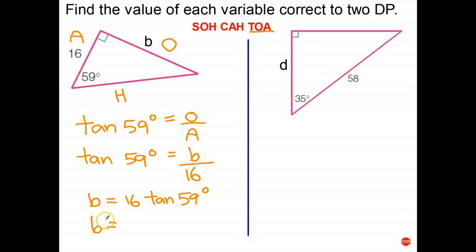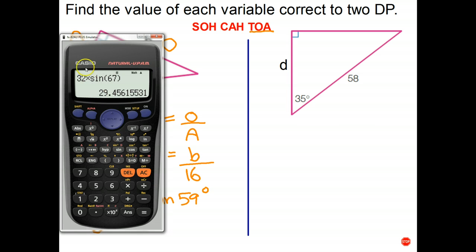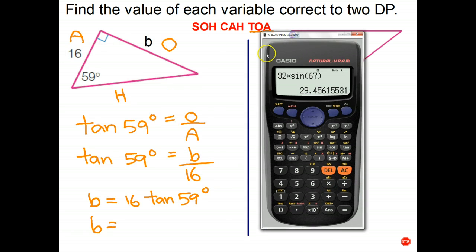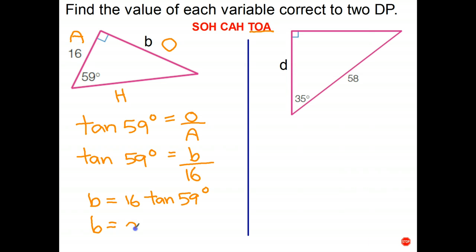And now we can use our calculator to work out the answer to that question. So we type in 16 times tangent 59 degrees. And to two decimal places we got 26.628, so 26.63. So the length of b is 26.63. And we don't have any units on this question so we just leave it at that.